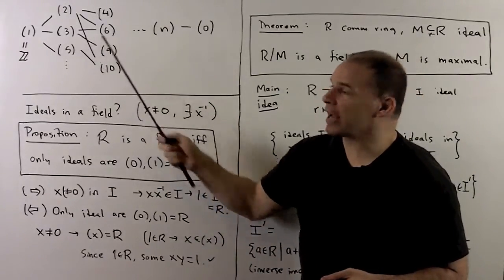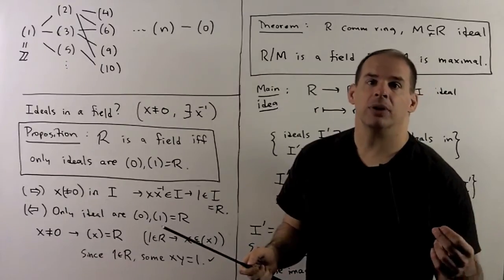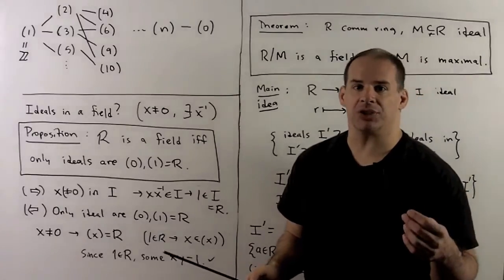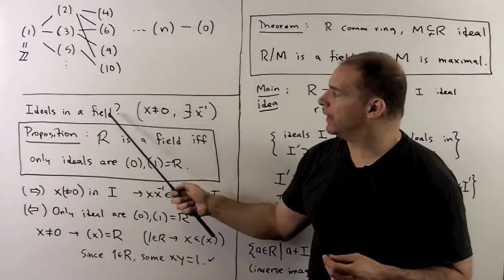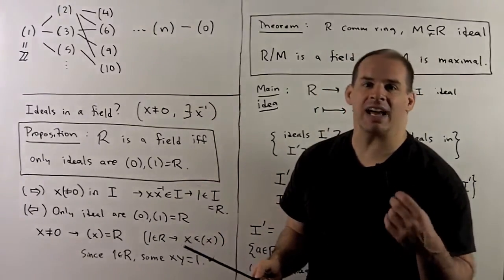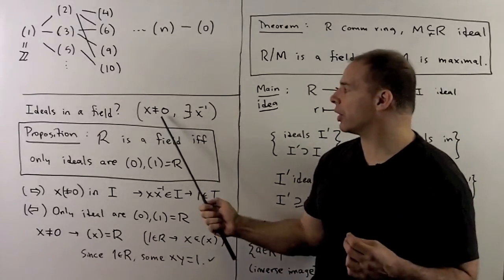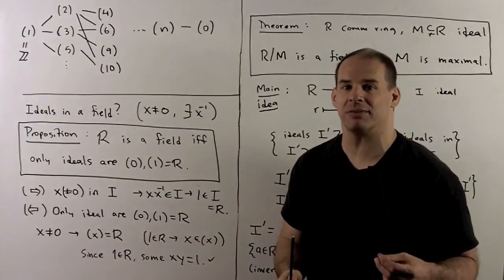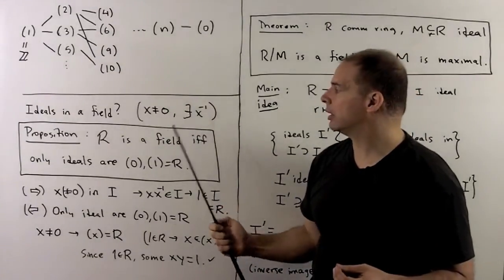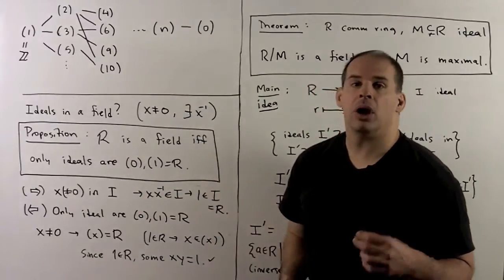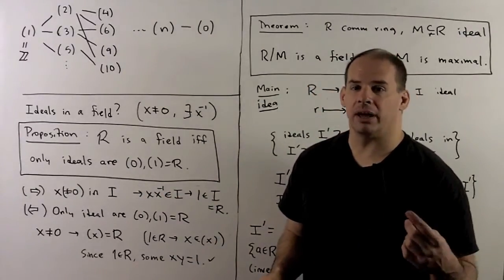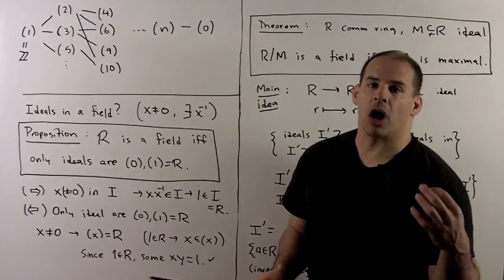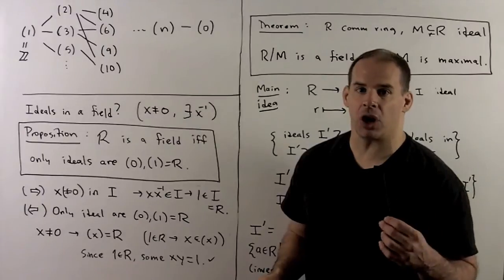Now I want to connect maximal ideals to fields. First question: what ideals appear in a field? There's a nice answer. Recall, a field is a commutative ring such that the non-zero elements are units — if X is non-zero, there exists a multiplicative inverse, so X times X-inverse equals 1. Proposition: R is a field if and only if the only ideals in R are the zero ideal and R itself. That is, R is a field if and only if there are exactly two ideals in R.